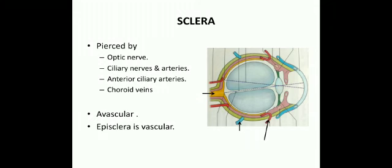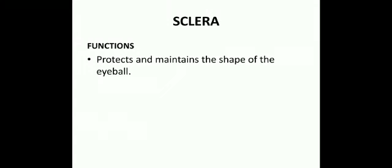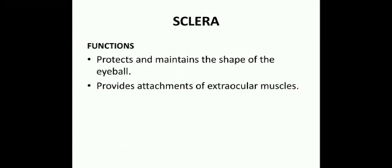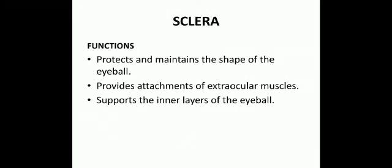The sclera is almost avascular except for the episclera, which is the tissue between the conjunctiva and the sclera — this part is vascular. The functions of the sclera include protecting and maintaining the shape of the eyeball, providing attachment for extraocular muscles, and supporting the inner layers of the eyeball.